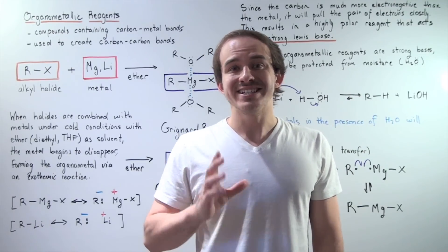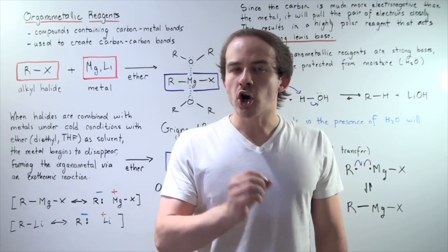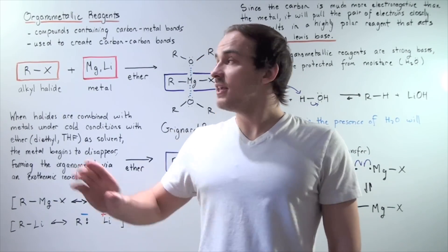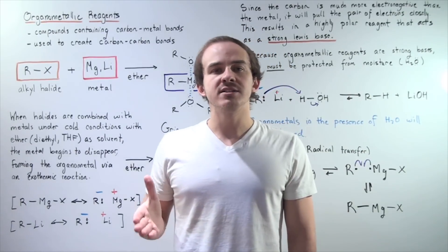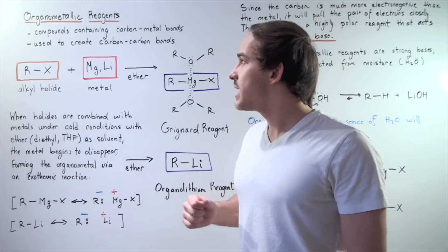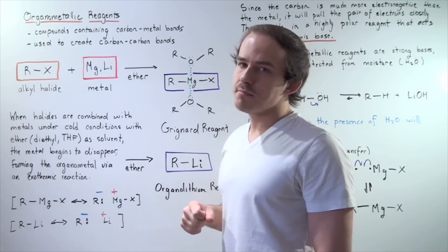Well, an organometallic reagent is simply put a compound that contains a carbon-metal bond. And these organometallic reagents are used to produce carbon-carbon bonds or carbon-H bonds. In this lecture, we're only going to focus on the carbon-carbon bonds.